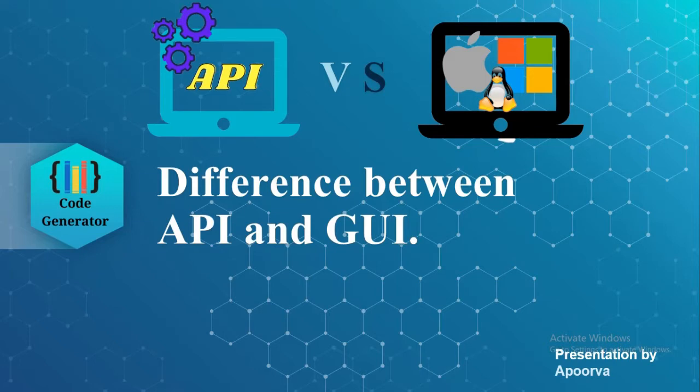API stands for Application Programming Interface, which is a collection of communication protocols and subroutines used by various programs to communicate between the technology products such as applications and websites.